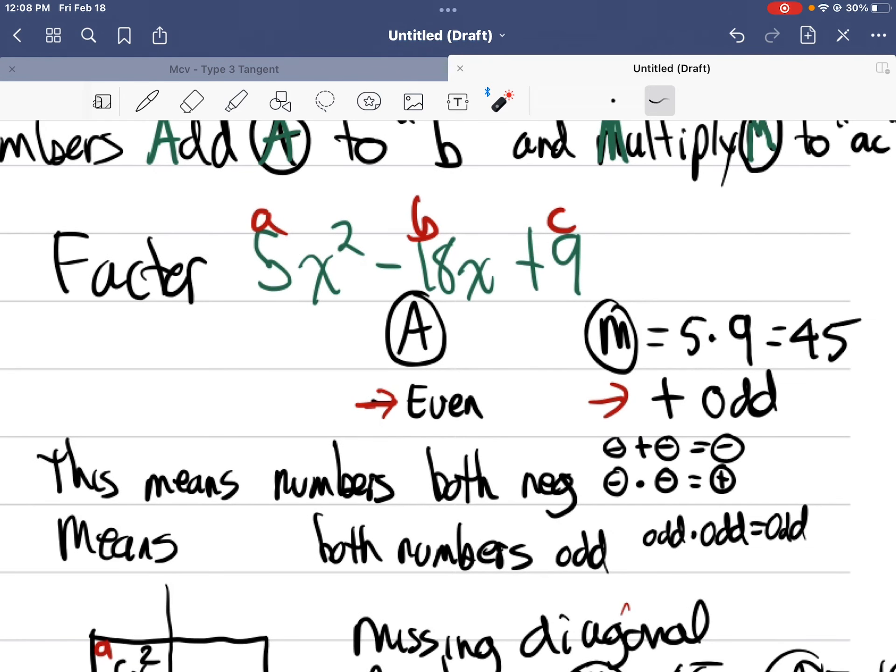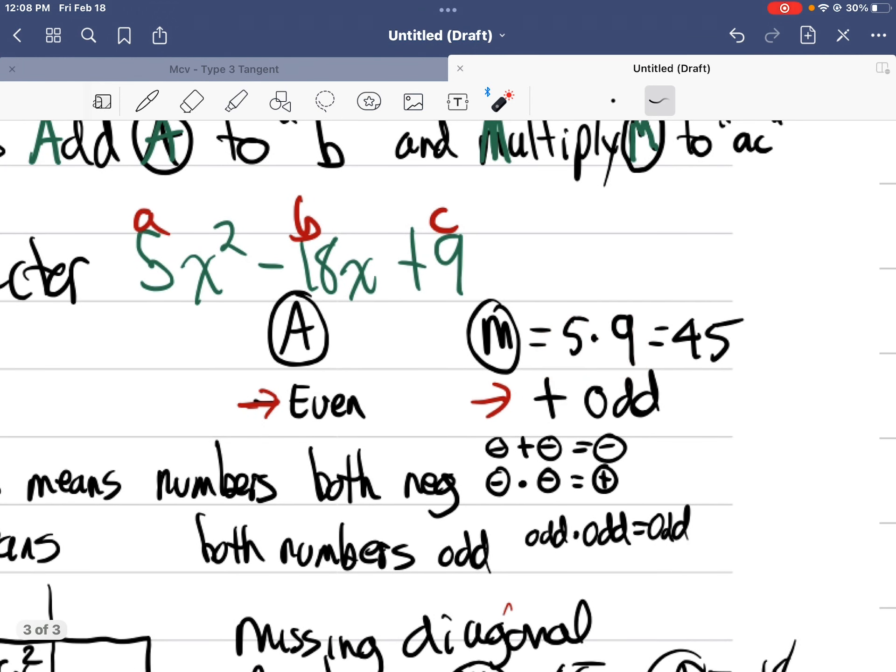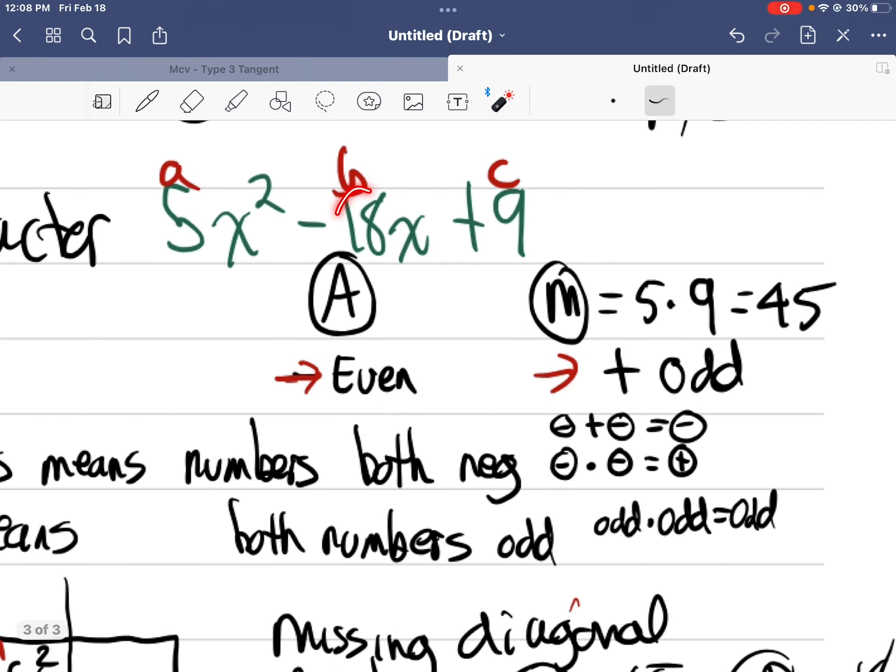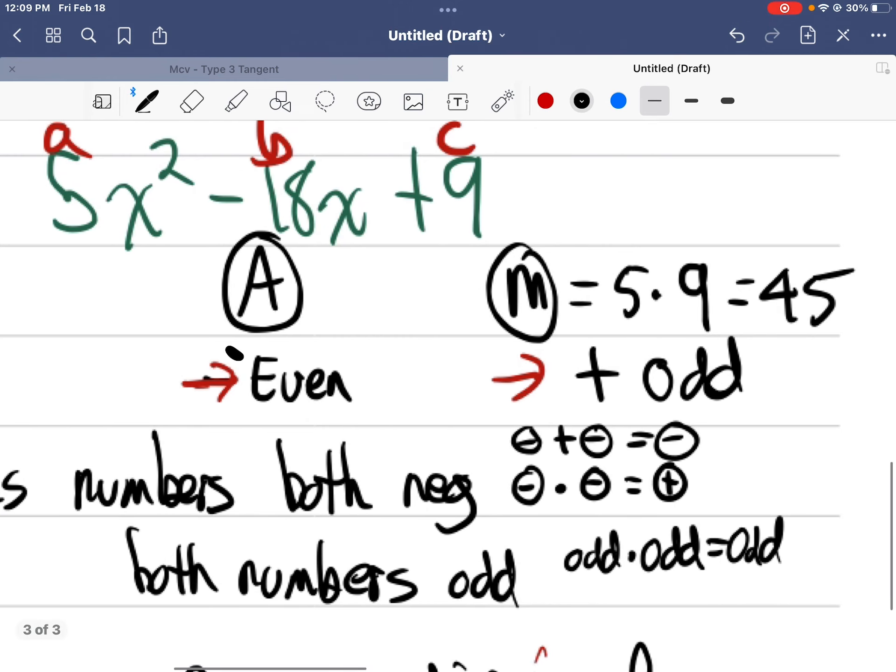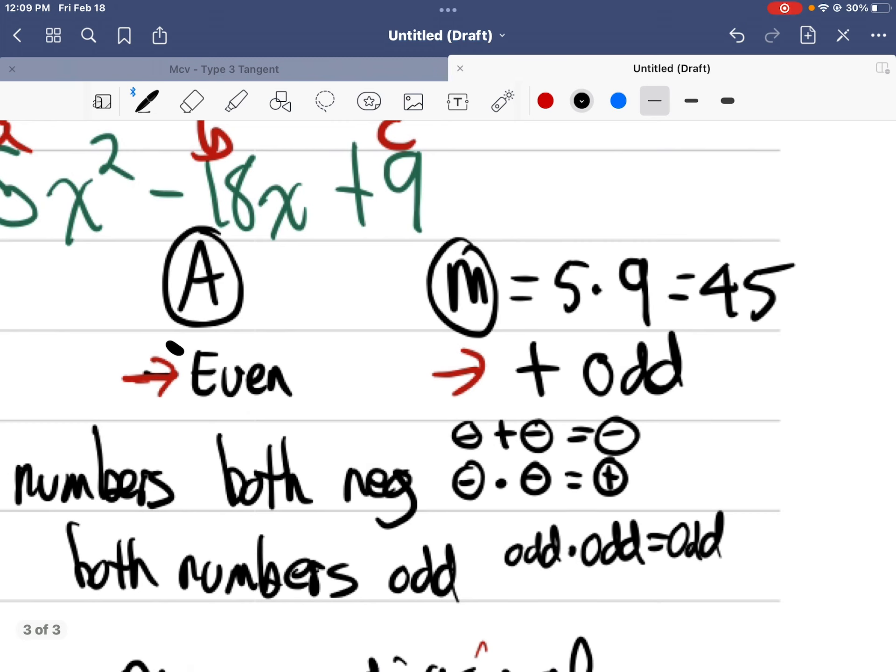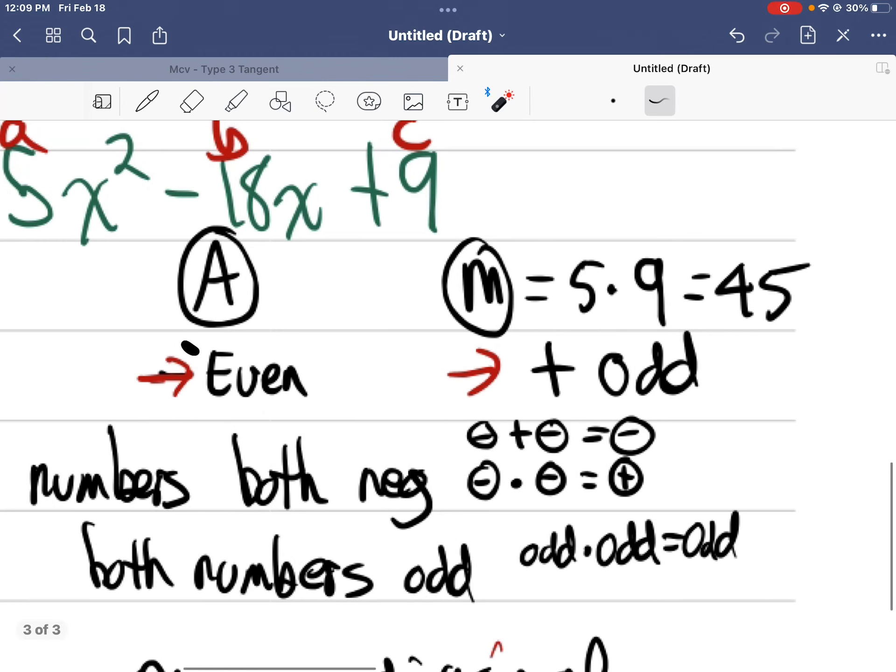Well, I know that the two numbers that I'm looking for have to add up to negative 18. They add to b and they have to multiply to a times c, five times nine. What does that tell me? Well, they add up to an even number and negative. So they add up to an even number and it's a negative even number. Let's look at this. They have to multiply, in this case, they multiply to 45. Well, what are the only kinds of numbers that multiply to 45? Two odd numbers, right? So I know both numbers I'm looking for are odd.